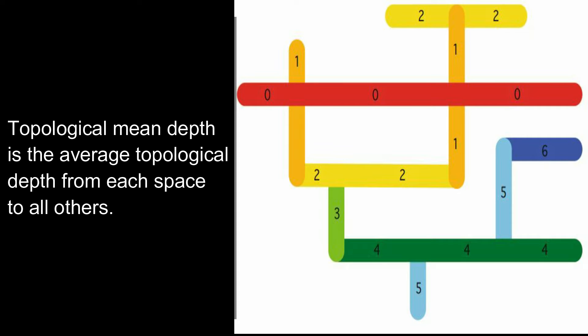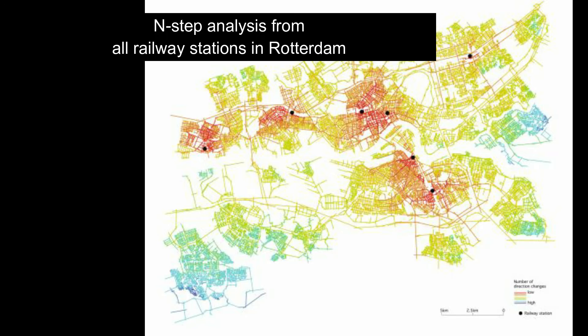Regarding topological mean depth, it is the average topological depth from each space to all other spaces. This connectivity map shows end-step analysis from all railway stations in Rotterdam.